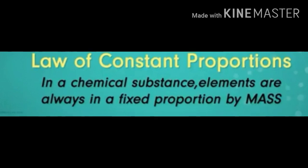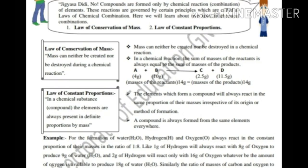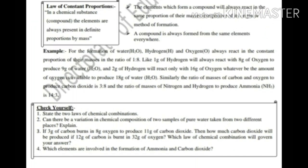So in a chemical substance, elements are always in a fixed proportion by mass, and this is our second law, law of constant proportions.